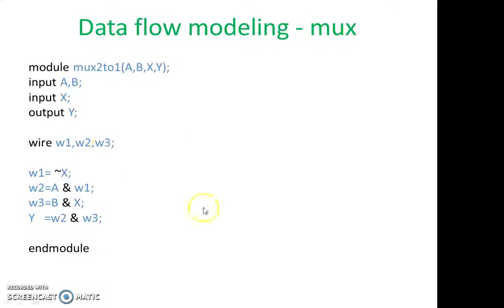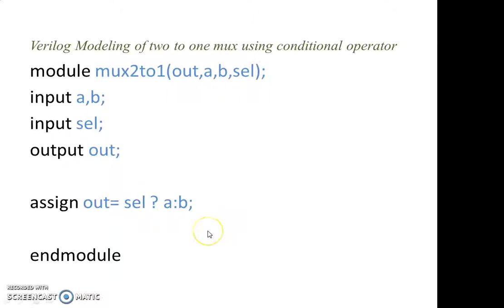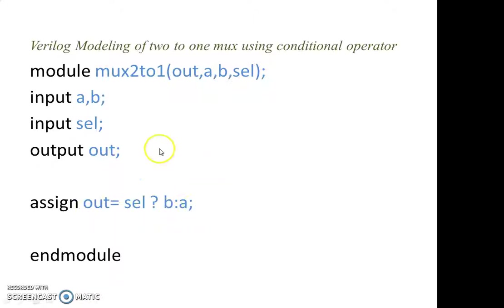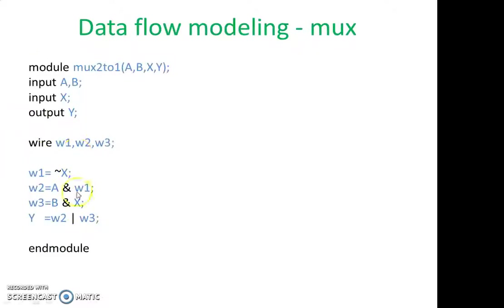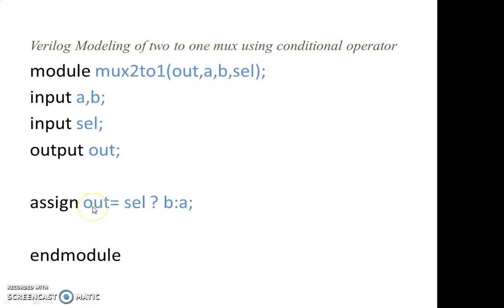Rather than using intermediate wires, we can write the 2-to-1 MUX in a single line using the conditional operator. The output y is determined by the select line: if select is 1, take b; if select is 0, take a. Written as: assign y = select ? b : a. This avoids the need for intermediate wires. The corrected gate-level program also uses a straight pipe line for OR. Some circuits will be given as assignments for you to think about.